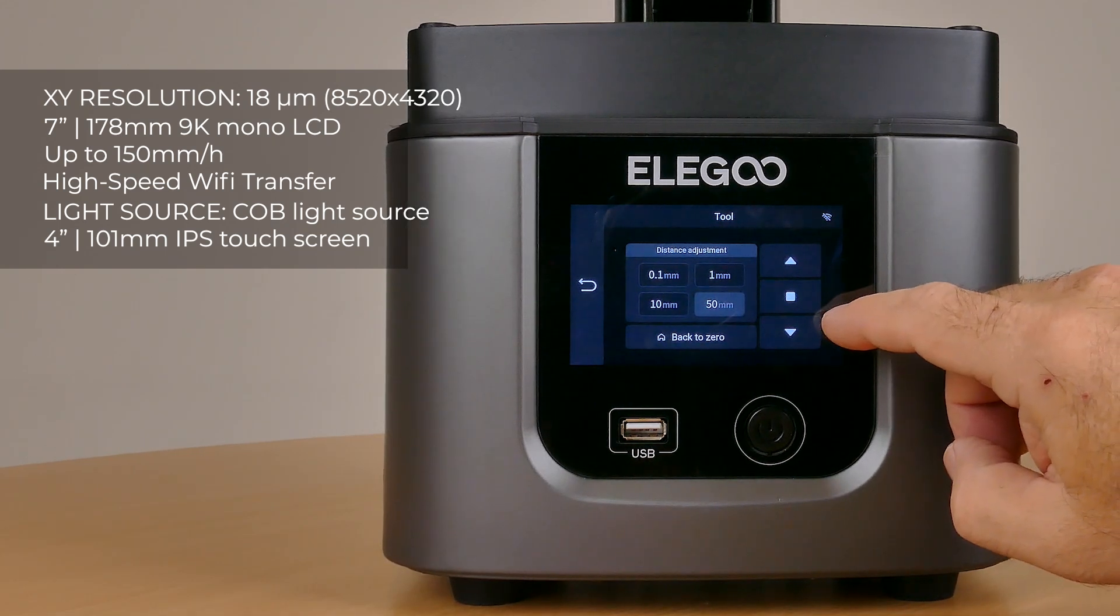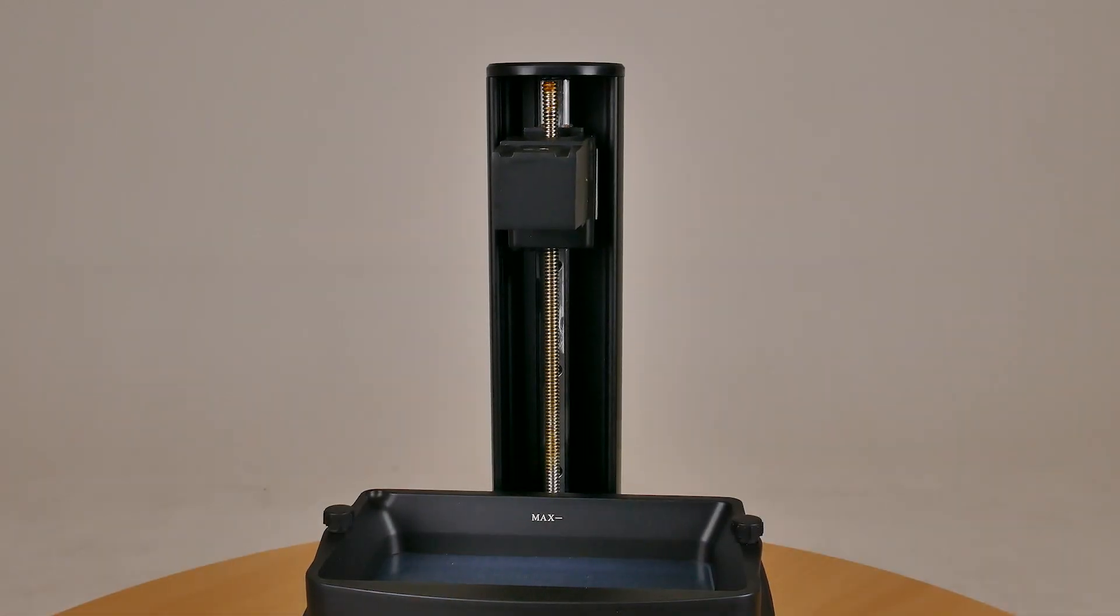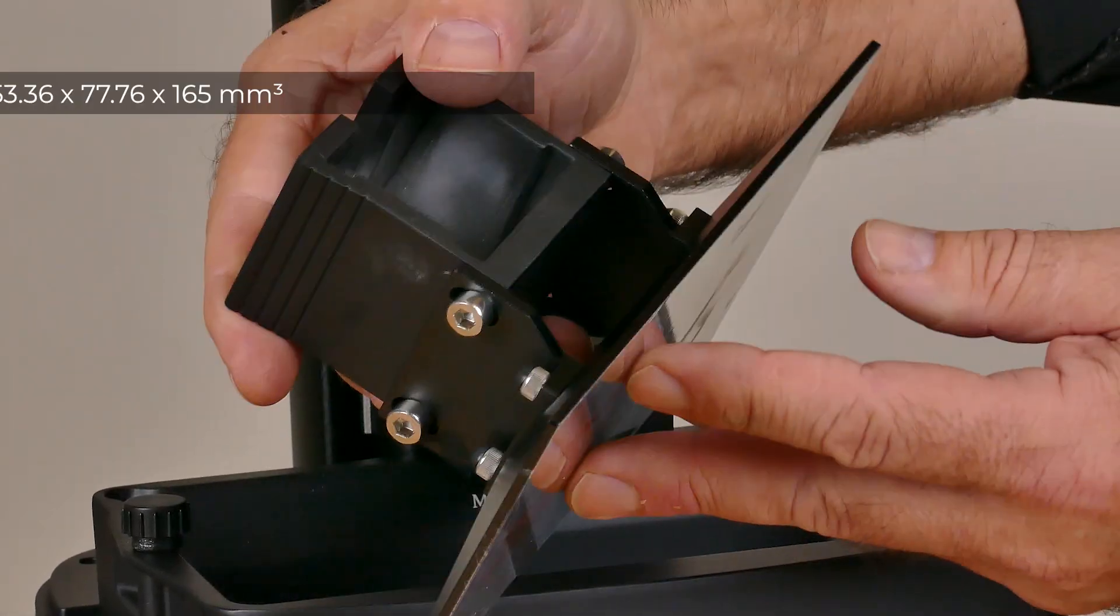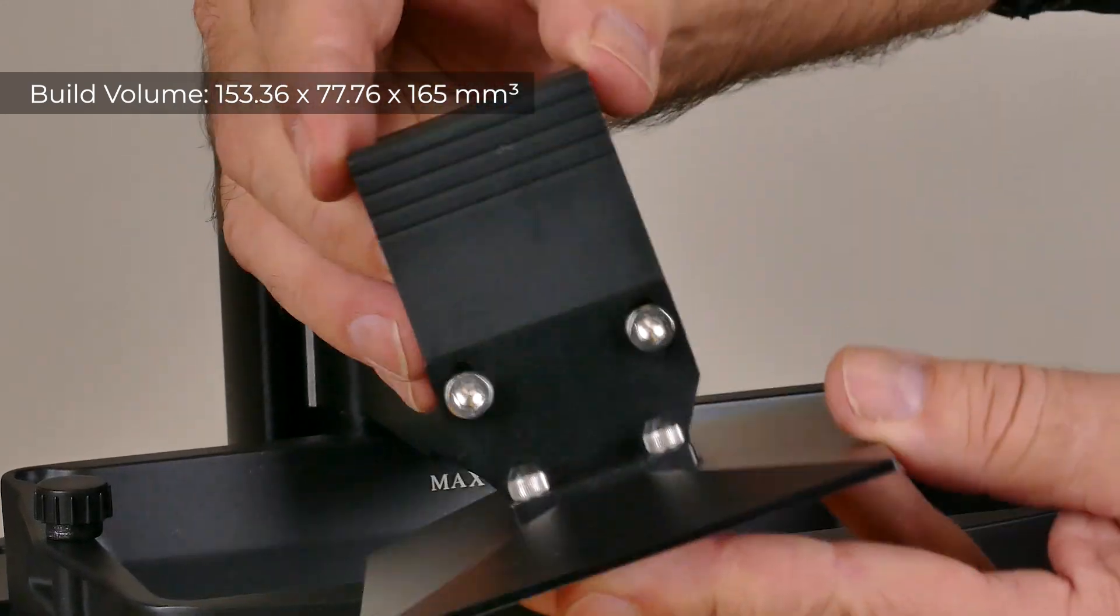Now we've got everything unpacked, let's start setting up the machine. First thing we need to do is raise the build plate holder and there it is with a great little volume of 153 by 77 and 165.